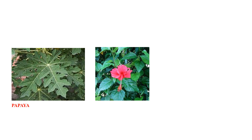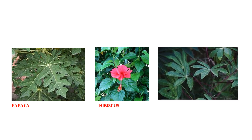Now observe this leaf. It is a papaya leaf. Leaves of papaya are irregular or uneven. Another example: Hibiscus, Tapioca, Tulsi. All these leaves are having uneven margin.